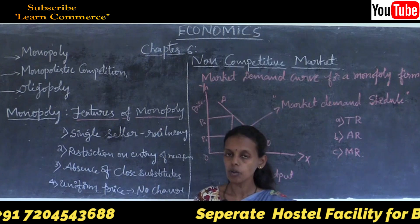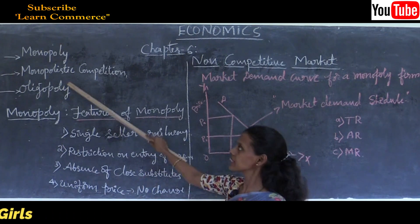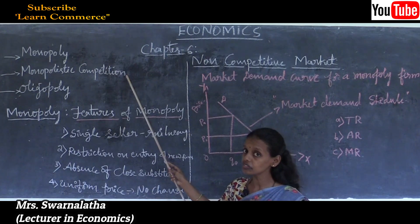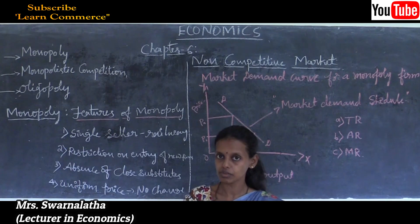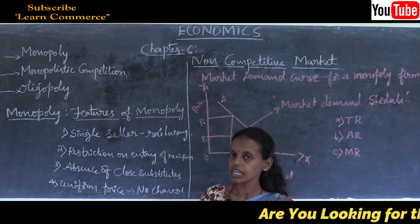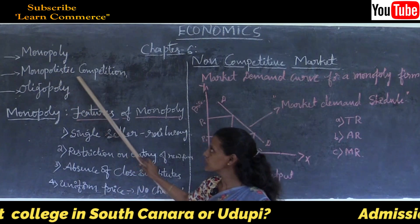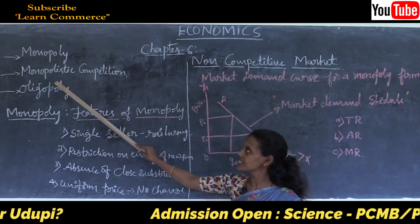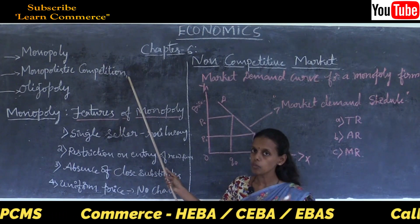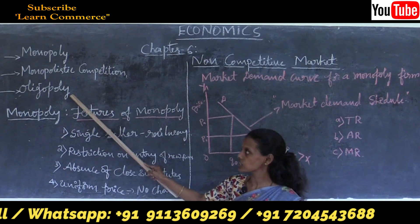So monopoly means single seller dealing with a large number of buyers in the market. Monopolistic competition is a situation where there are also large numbers of buyers and sellers, but they deal with heterogeneous or differentiated products. Under perfect competition, large numbers of buyers and sellers deal with homogeneous identical products, but under monopolistic competition firms produce different kinds of goods.